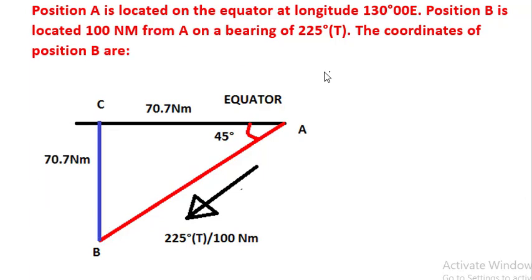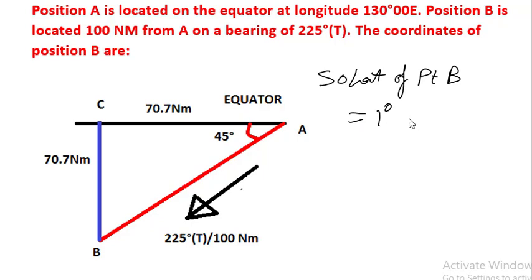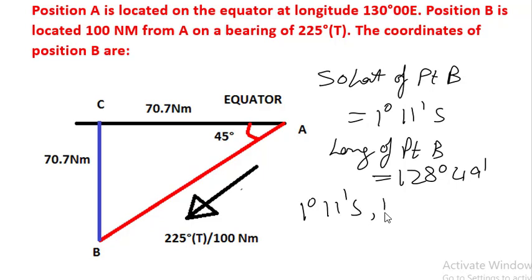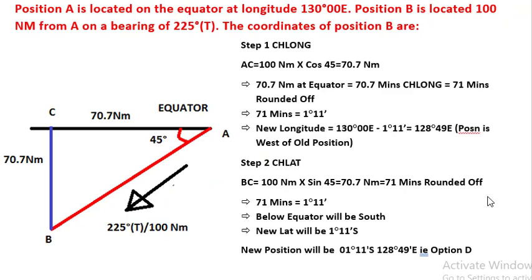So the latitude of point B is 1 degree 11 minutes south, and the longitude of point B is 128 degrees 49 minutes east. The position — latitude and longitude — of point B is 1 degree 11 minutes south, 128 degrees 49 minutes east. Let's now look at summarizing this question and answer.